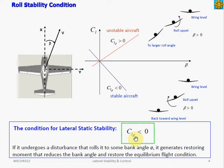Note that when the aircraft rolls, it also begins to sideslip. For example, when the aircraft banks right wing down, it would yaw nose to the left. A positive rolling moment also creates a positive sideslip, as shown in this diagram — the aircraft is rolling its right wing down, causing its nose to yaw to the left, giving us a positive sideslip angle.